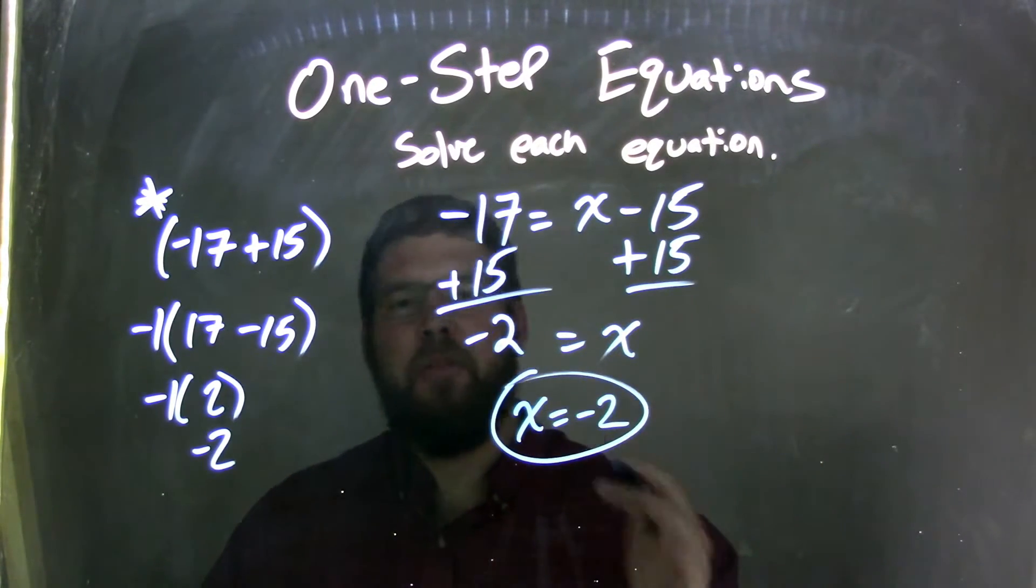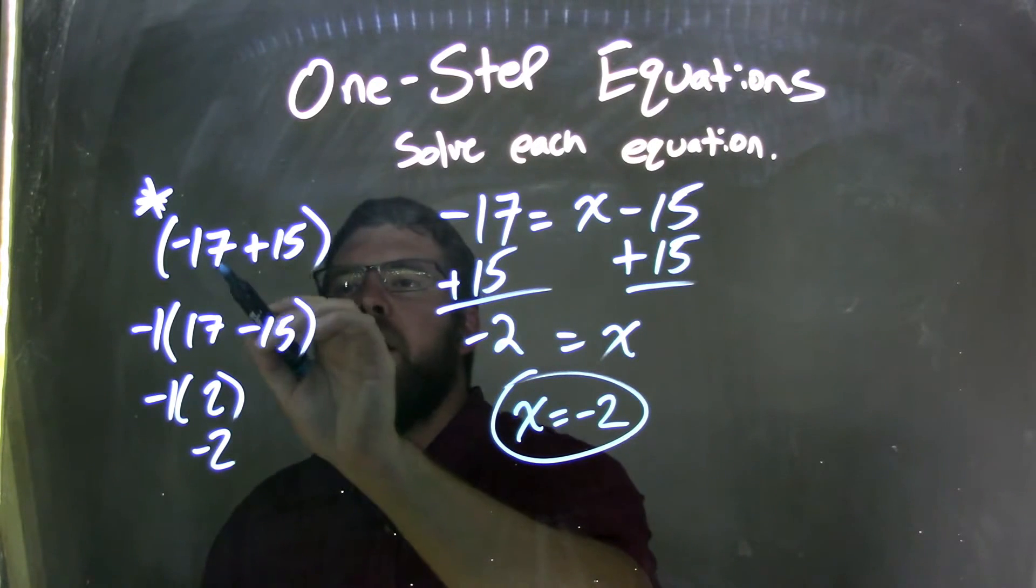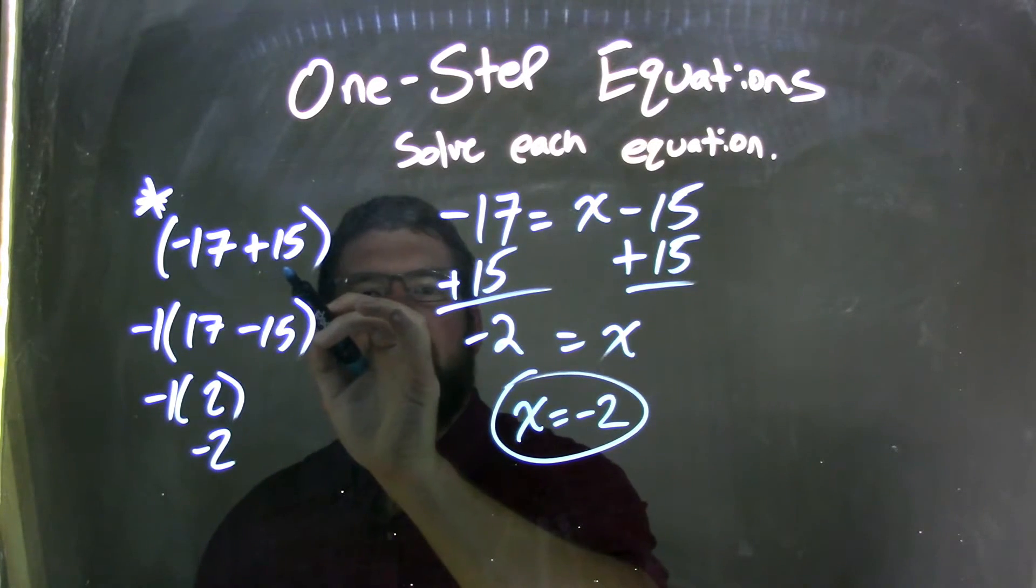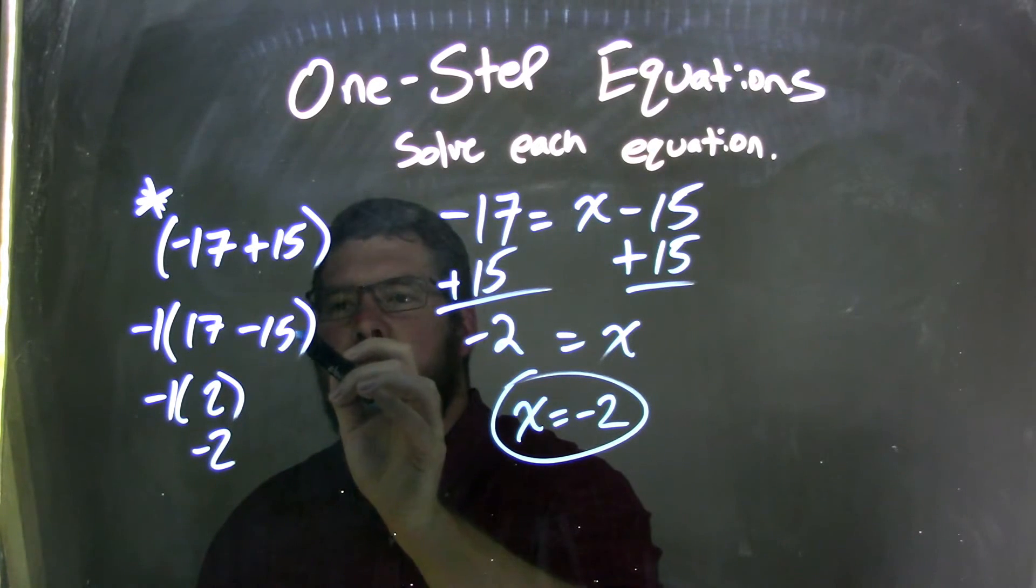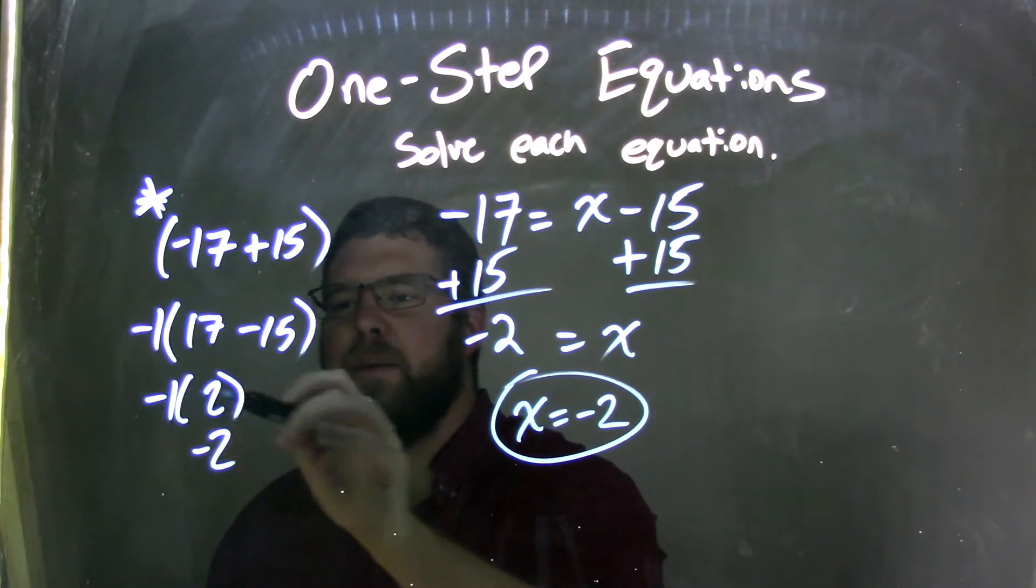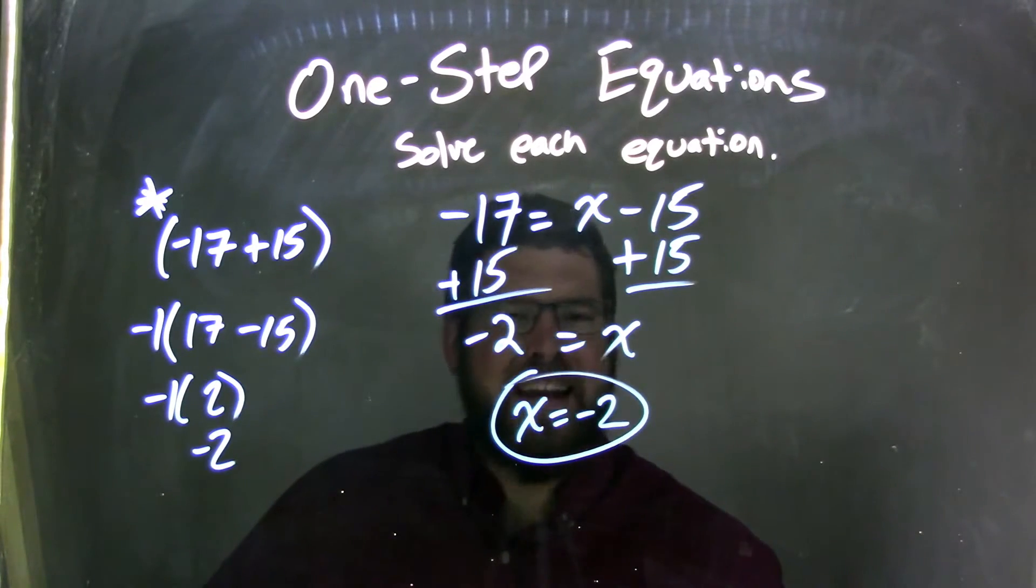But one of the methods I'm showing in this video here, if I write it like this, negative 17 plus 15, if I pull out a negative 1, I'm left with 17 minus 15. Well, 17 minus 15 is a lot easier to do, it's 2, times that negative 1 back in, and I get negative 2.